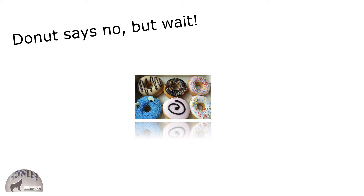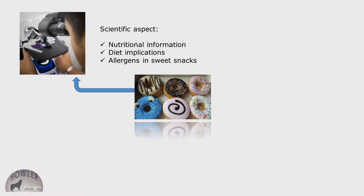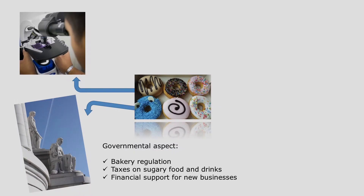For 1500 or more words, consider the following. You could explore a scientific aspect of this topic such as nutritional information, the implications to your diet, or the allergens commonly found in sweet snacks like donuts. You could explore an aspect related to government regulation on bakeries, or propose taxes on sugary foods, or what local governments can do to support small business.